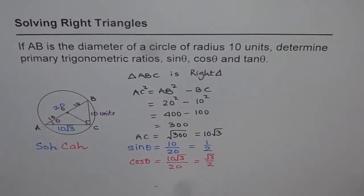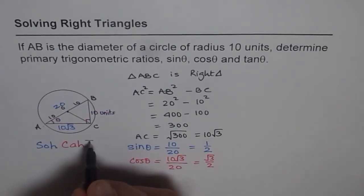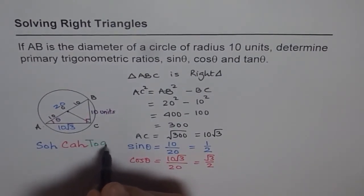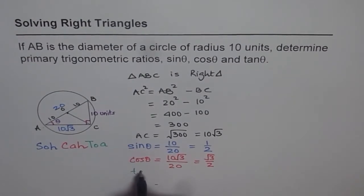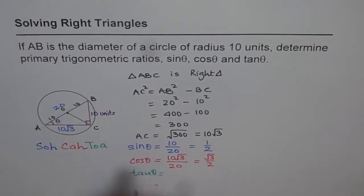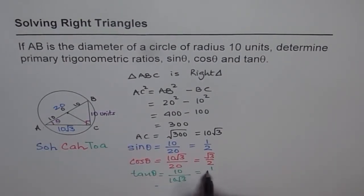And how about tan θ? Tan θ is opposite over adjacent. So we can write tan θ as equals to opposite of 10 and adjacent of 10√3. That gives us a value 1/√3.